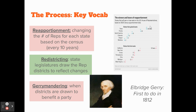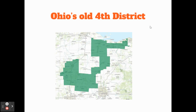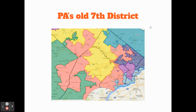There are some classically gerrymandered districts. Ohio's old fourth district is known as 'the duck' because of its shape. Pennsylvania's old seventh district is another example — shown in pink here. It's one continuous shape, as it has to be, but it's designed to include certain groups and exclude others. This one is nicknamed 'Goofy,' supposed to look like Goofy with floppy ears kicking Donald Duck.